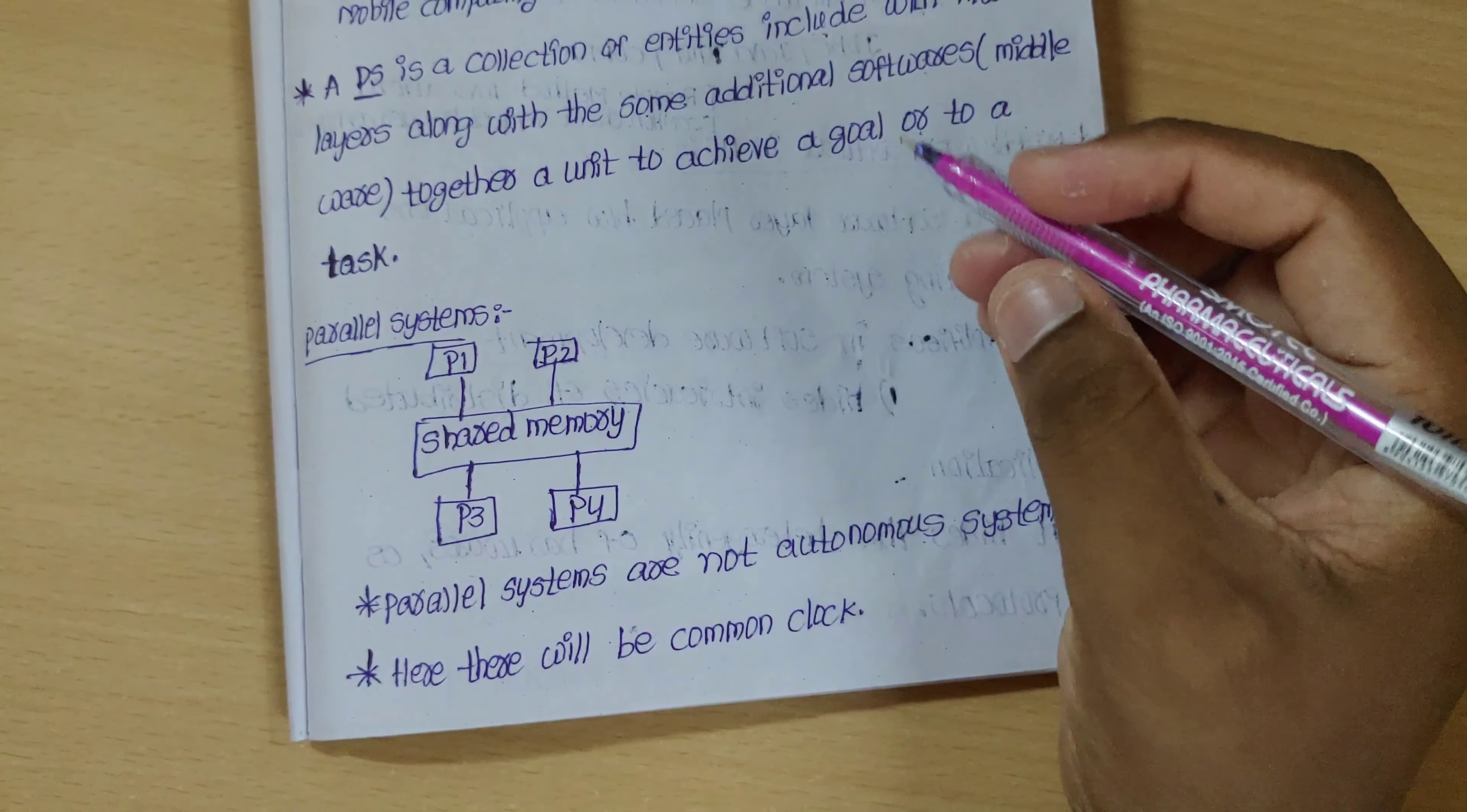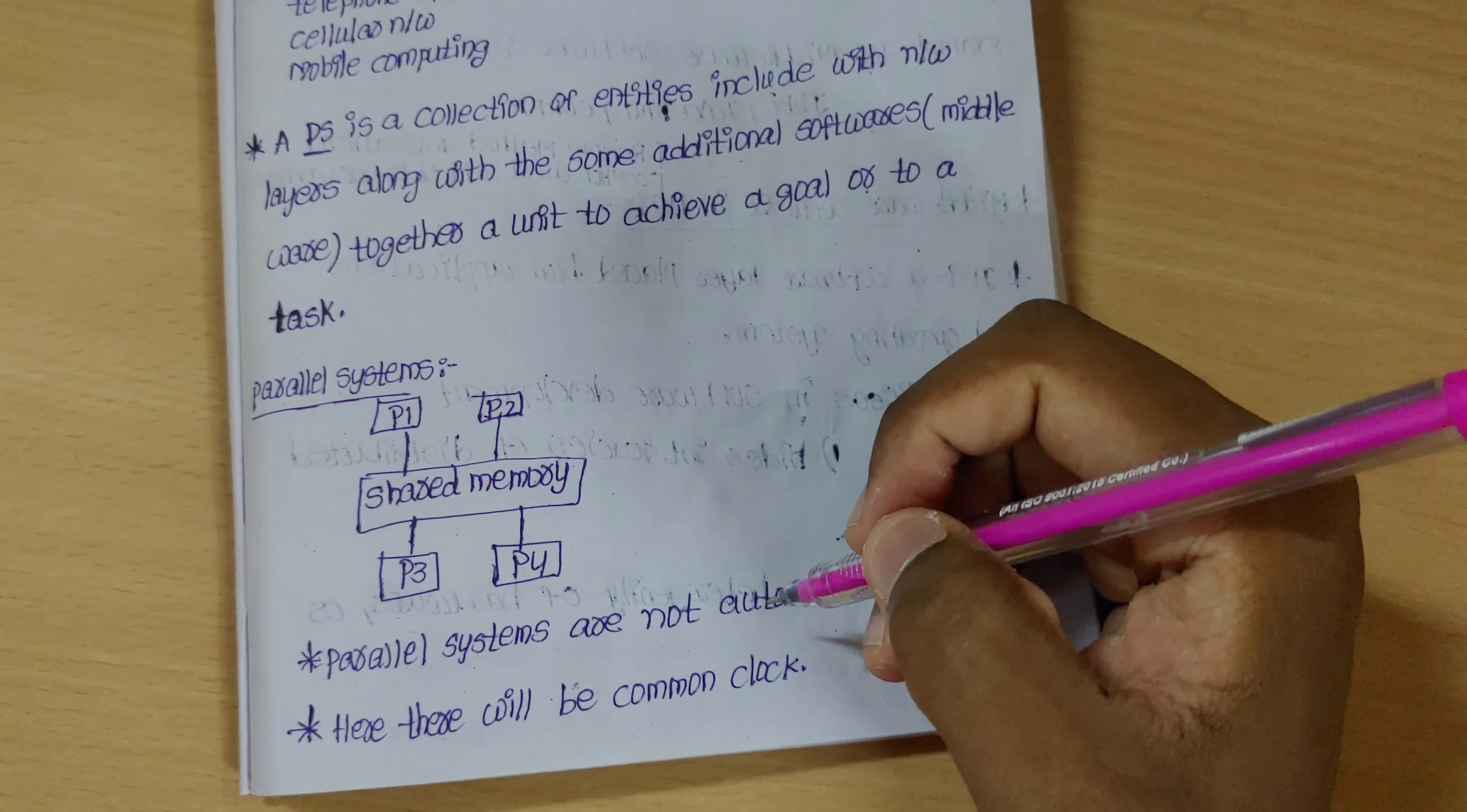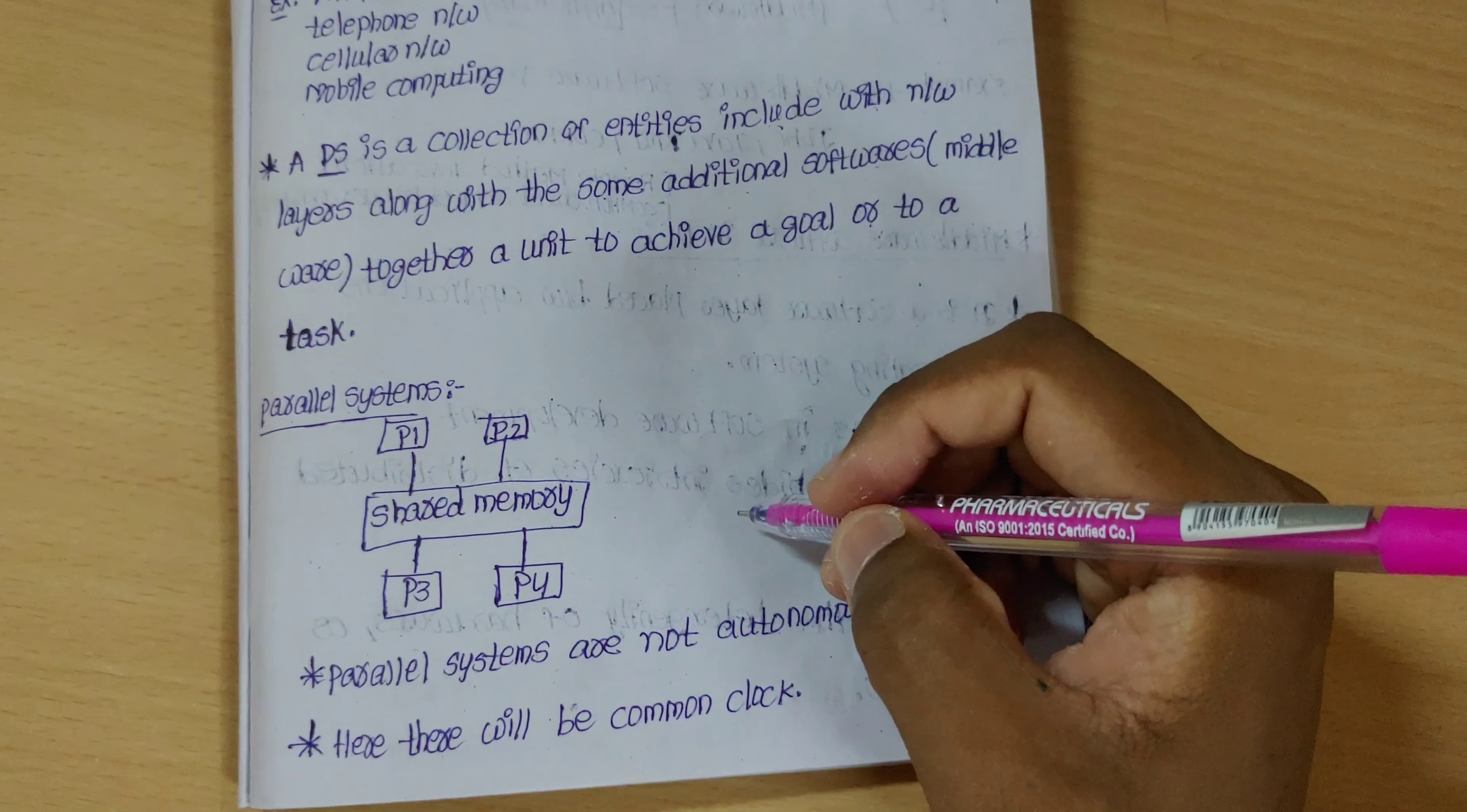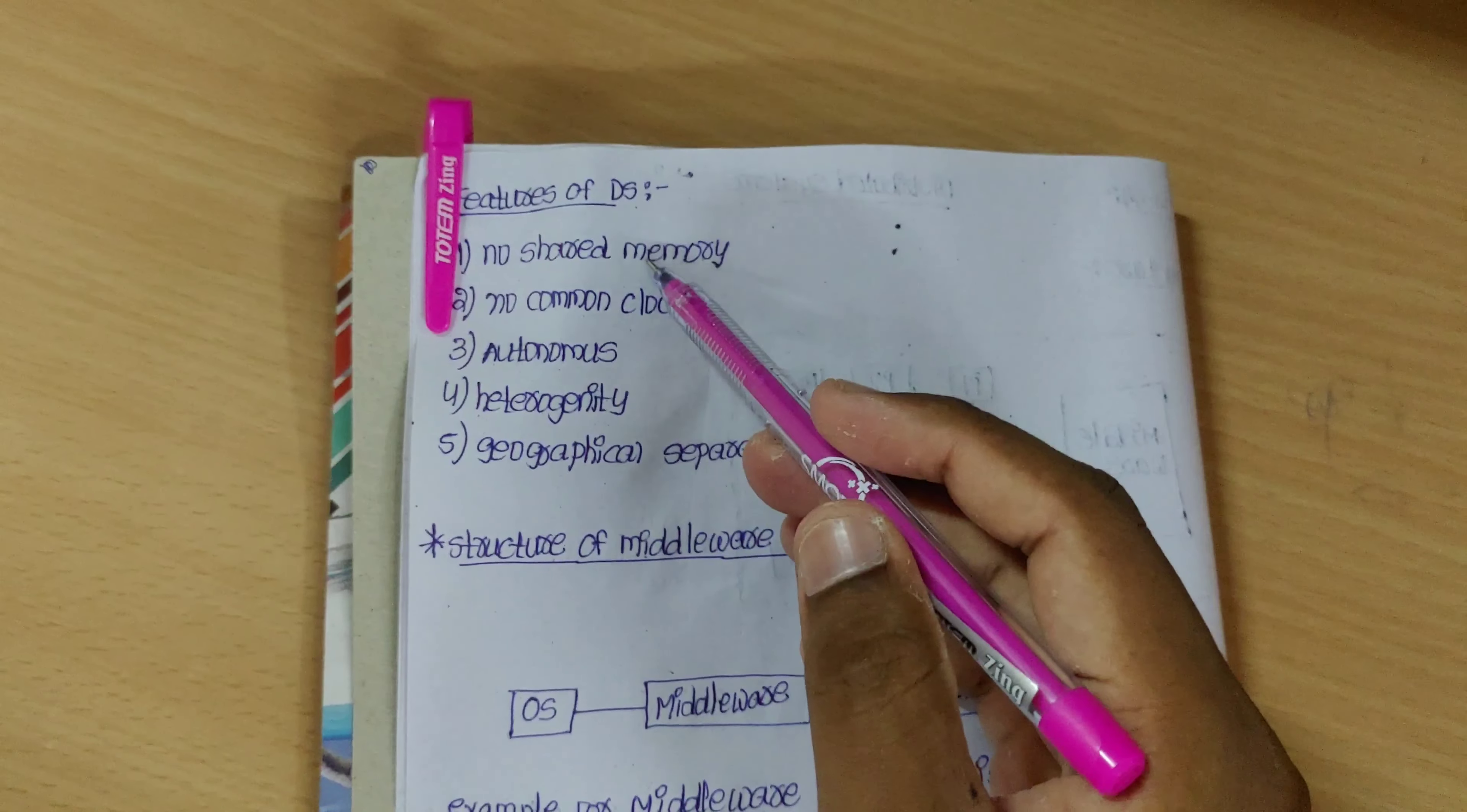So there are two kinds of systems: the parallel system and the distributed system.